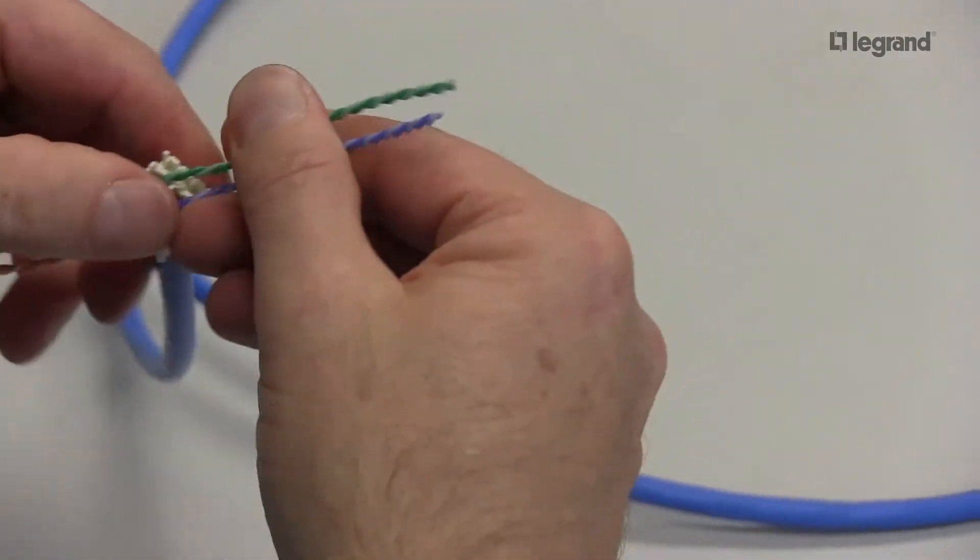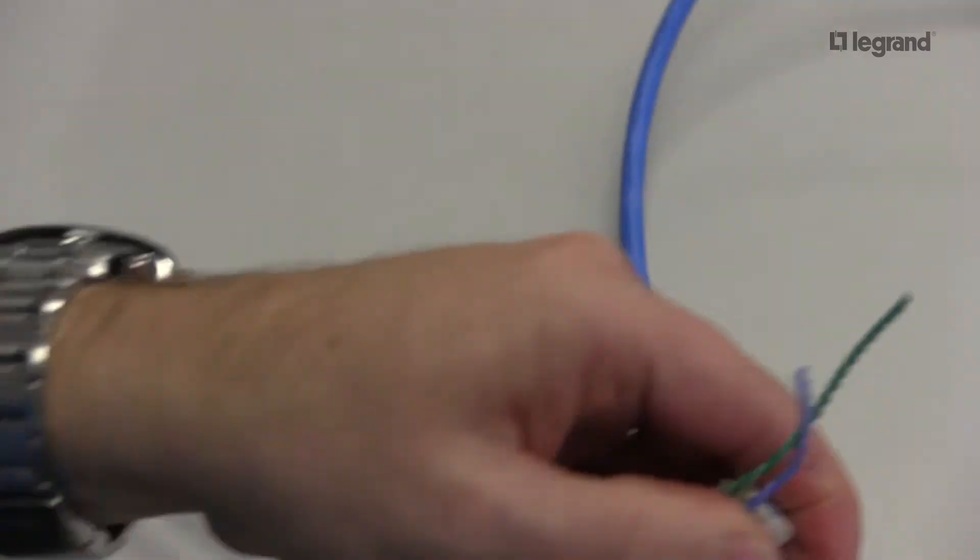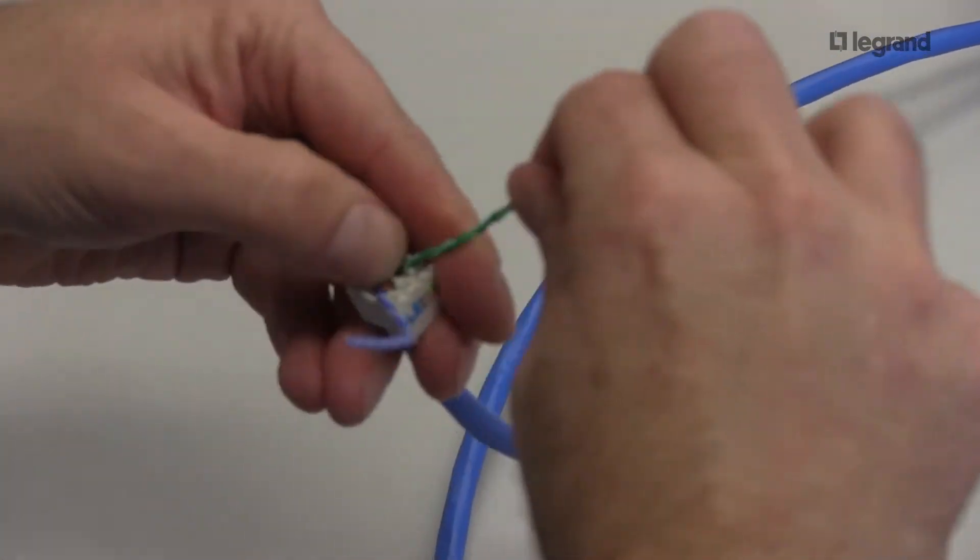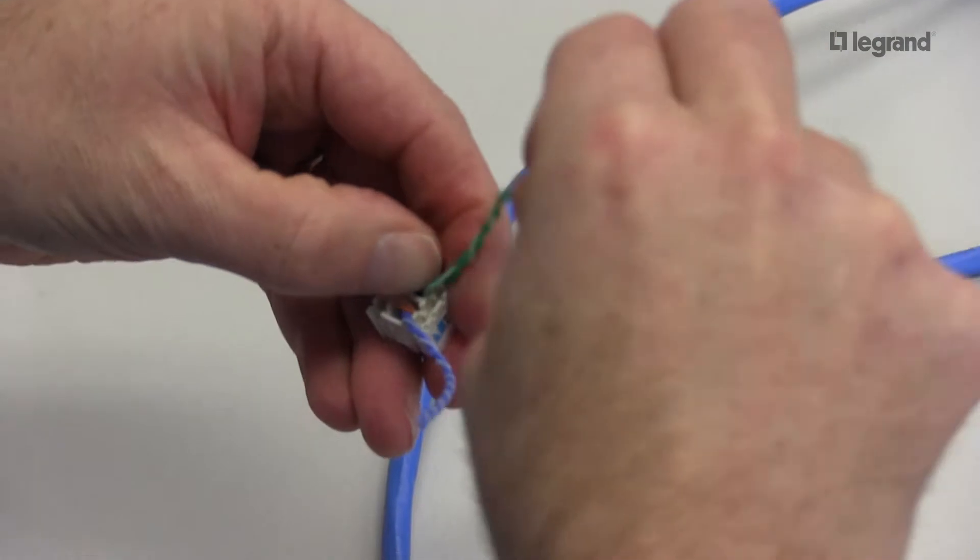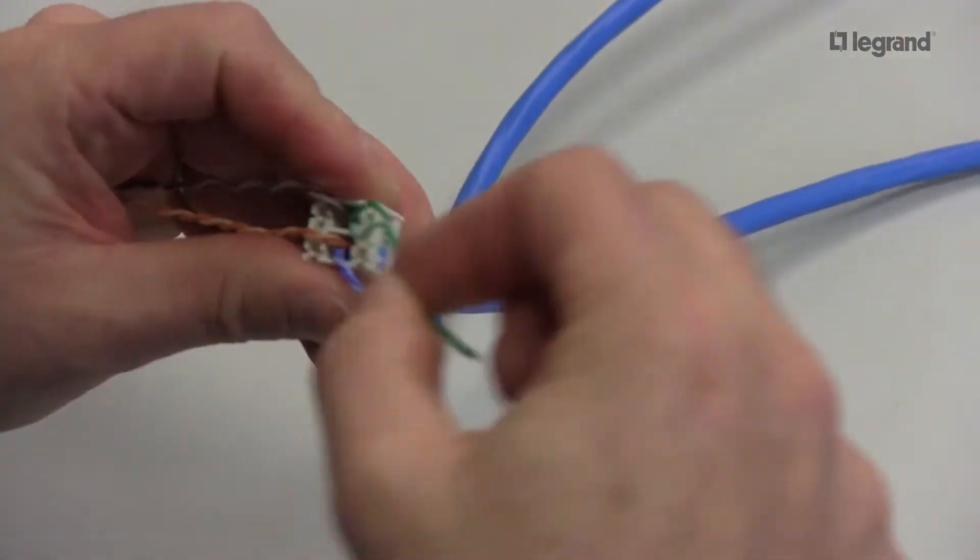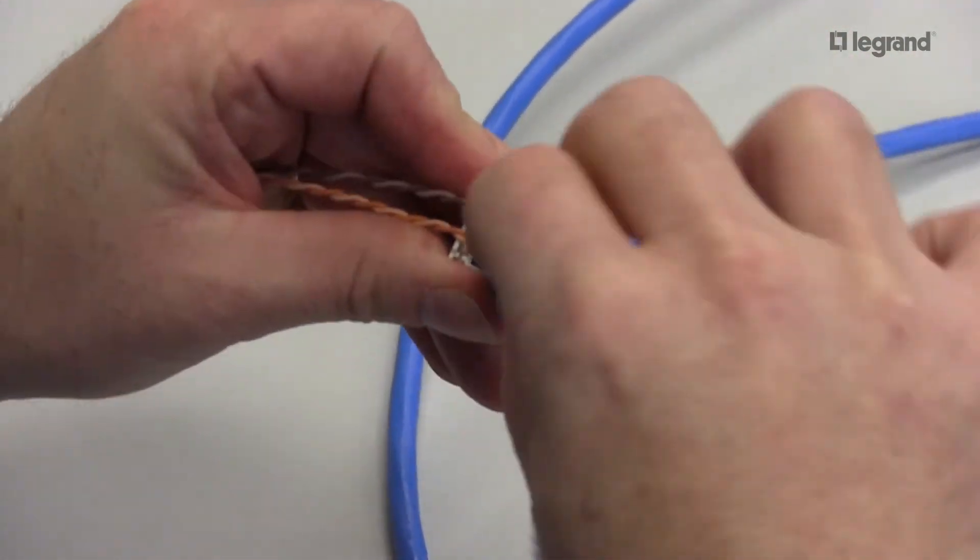Separate my cables. From here, you just separate your pairs like a normal termination. I will split my white-green and my green-white. Following the color codes.